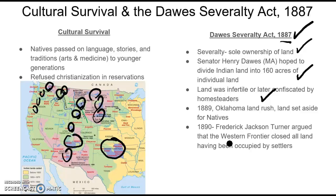Two years after the Dawes Severalty Act, in 1889, Oklahoma — land that had been reserved exclusively for Native Americans — was opened for settlement in what became known as the Oklahoma Land Rush. Land set aside for Native Americans was taken over by whites. A year later, in 1890, historian Frederick Jackson Turner argued that the Western frontier was now closed for settlement because all land that could possibly be occupied had been occupied by white settlers. Little did he know that less than ten years later, the American government would take over overseas territories like the Philippines and Cuba — the American expansion was only just beginning.